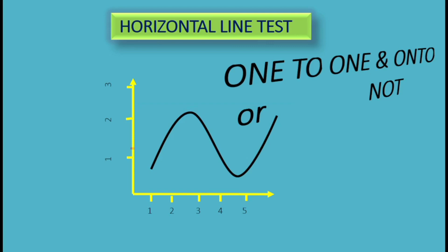In the third case, if a horizontal line drawn anywhere from the co-domain meets the function at exactly one point, then any horizontal line, when it meets the curve at most only one point, it represents a one-to-one function.